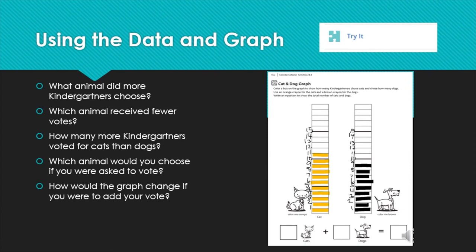So let's take a look at the cat. The cat had 11 and the dog had 9. Which animal had more? That's right, the cat. The cat had 11 and the dog had 9. And I know that 11 is 2 more than 9.